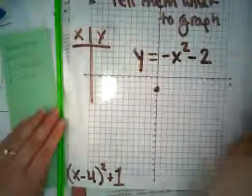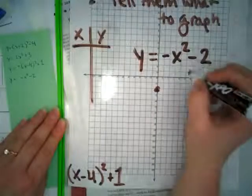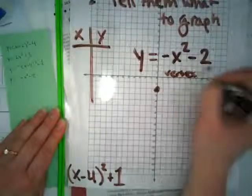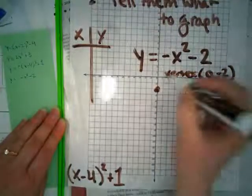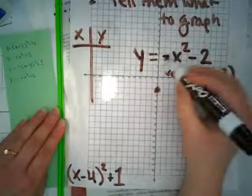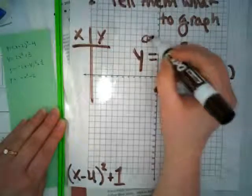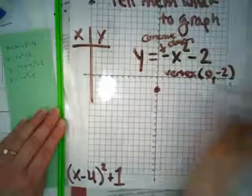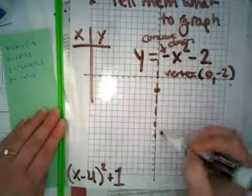All right, so from y equals negative x squared minus 2, we had previously stated that the vertex was at 0, negative 2, and so that's plotted right here. We also noted that this negative told us it was concave down, and our axis of symmetry is at x equals 0.